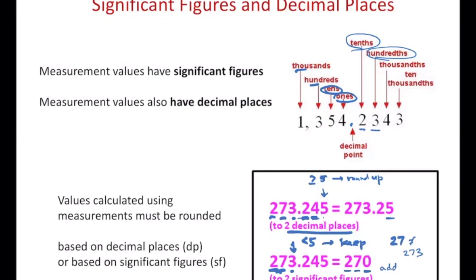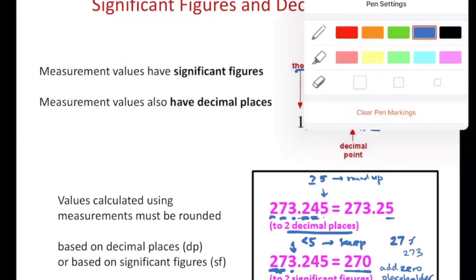What you do is add a zero to hold the place where that three was. So this becomes 270 and it has two significant figures — because that zero on the right is a trailing zero, and trailing zeros are never significant unless there's a decimal, and there's no decimal there.